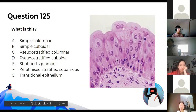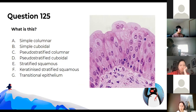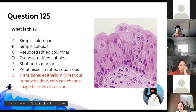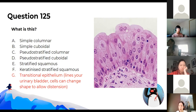This is transitional epithelium, which lines your urinary bladder and urinary tract. These cells can really change shape — which is necessary because the bladder needs to expand a lot to hold urine.